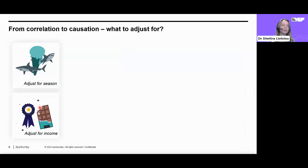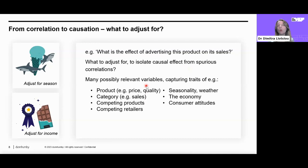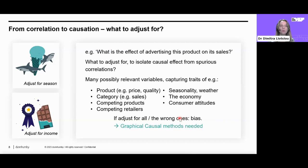As we saw before, the solution to go from correlation to causation was to adjust for key underlying causal variables. But if we're asking about the effect of advertising a product on its sales, what should we adjust for to isolate the causal effect from spurious correlations? There are many possibly relevant variables: product traits like price or quality, category sales, competing products, competing retailers, seasonality, weather, economy, and consumer attitudes. The question is whether we should adjust for all of them. If we naively adjust for all or adjust for the wrong ones, we might introduce bias into our estimates. To answer what we should adjust for, we need graphical causal methods.